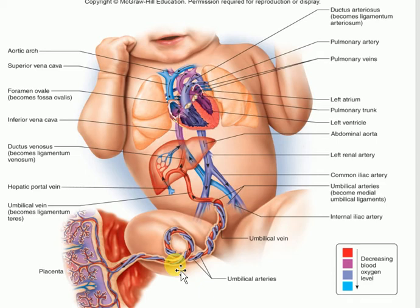Other than the pulmonary and fetal exceptions, any red vessel is an artery and any blue vessel is a vein. This is emphasized because mistakes always happen here. So: all arteries are red, all veins are blue — except pulmonary and fetal, where it's the opposite.